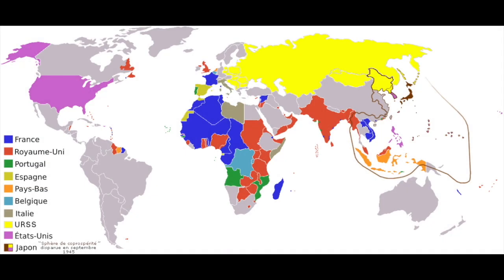Beyond colonial languages like English, French and Spanish, roughly 300 mutually unintelligible languages were spoken by the indigenous nations of North America at the time of first European contact. Most of them are no longer spoken, due to the colonial extermination of their speakers.